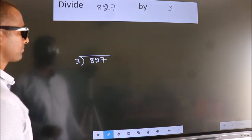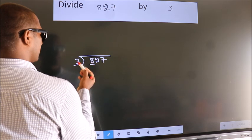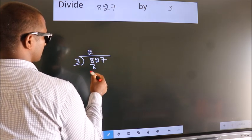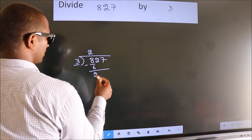Next, here we have 8. Here 3. A number close to 8 in 3 table is 3 twos, 6. Now we should subtract. We get 2.